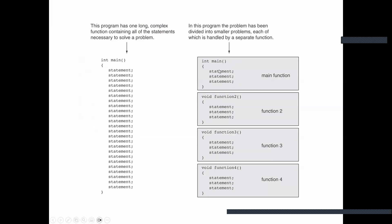The main function is where execution will take place. We have function two performing a specific task, function three performing a different task, and function four performing yet another task. We then call or invoke all three functions inside the main function. Function two may also call function three, so invoking function two will automatically invoke function three as well.